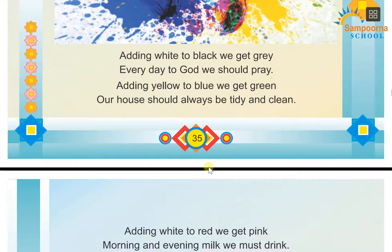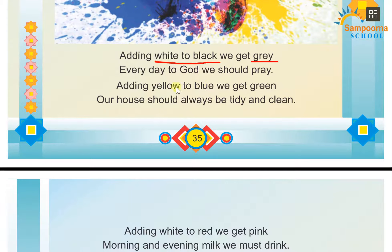Here is the poem. 'Adding white to black, we get gray. Every day to God, we should pray. Adding yellow to blue, we get green.' So if you mix white and black, you get gray. If you mix yellow and blue, you get green.